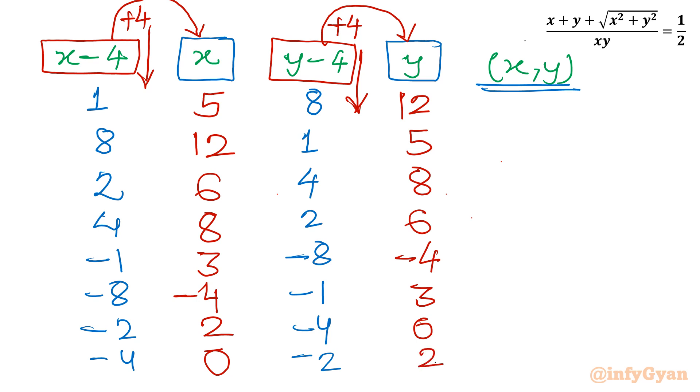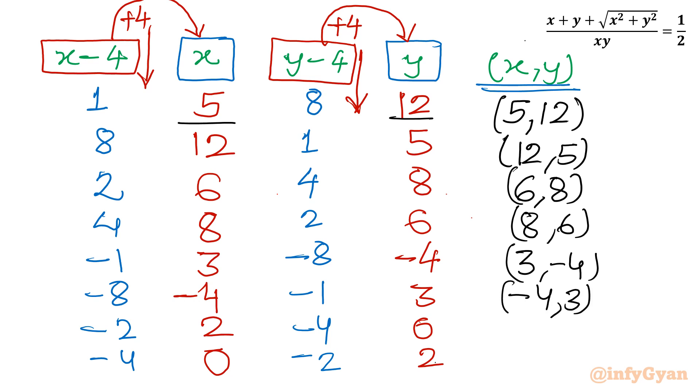Now we will reject those set where we are getting either x or y 0 or both 0 or negative values. So you can easily see, first you will write ordered pair. So ordered pair is x value and y value. Let me write here. 5, 12. The first answer or ordered pair. 12, 5. 6, 8. 8, 6. Then we are having 3 minus 4. So x, y minus 4, 3. We will reject all. 2, 0. 0, 2. Where I am not getting positive integer we can cancel.